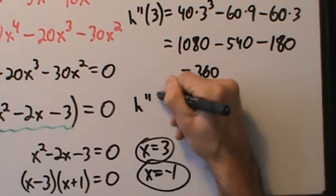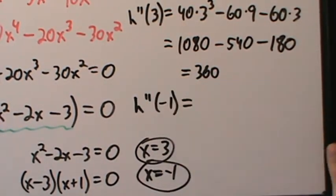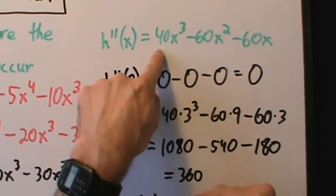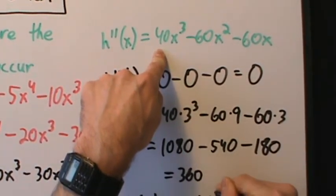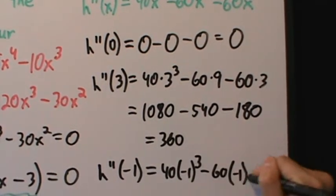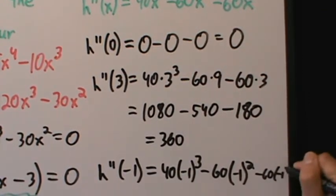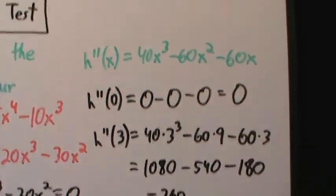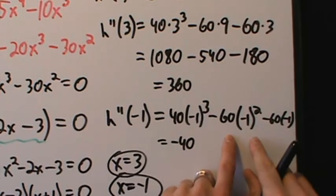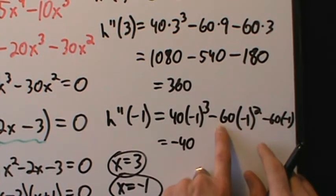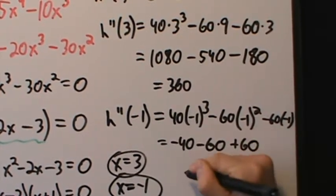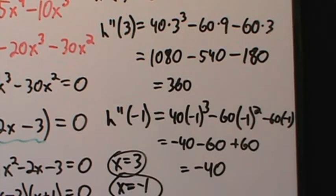Now h double prime of negative 1: that's 40 times negative 1 cubed minus 60 times negative 1 squared minus 60 times negative 1. Negative 1 cubed is negative 1, so we get negative 40. Negative 1 squared is positive 1, giving minus 60. And minus 60 times negative 1 gives plus 60. So the result is negative 40.